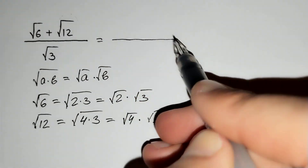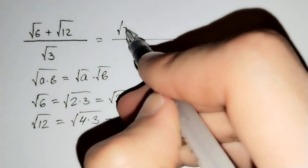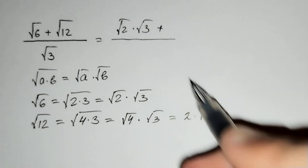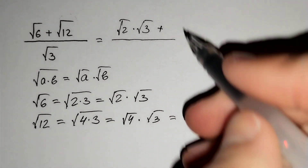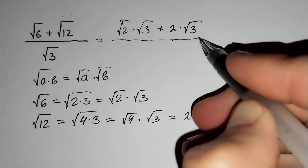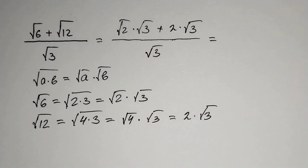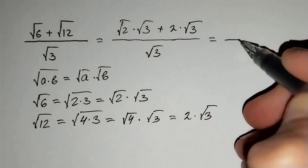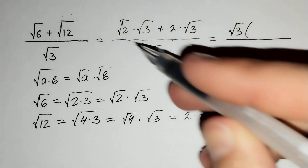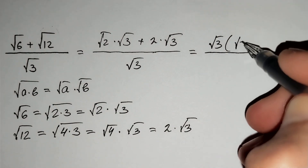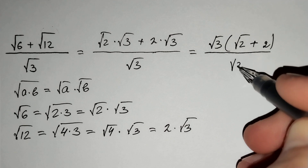And now, the square root of 6 — which equals the square root of 2 times the square root of 3 — plus the square root of 12 — which equals 2 times the square root of 3 — all over the square root of 3. We may take the square root of 3 out of the brackets in the numerator: square root of 3 times the quantity square root of 2 plus 2, over the square root of 3.